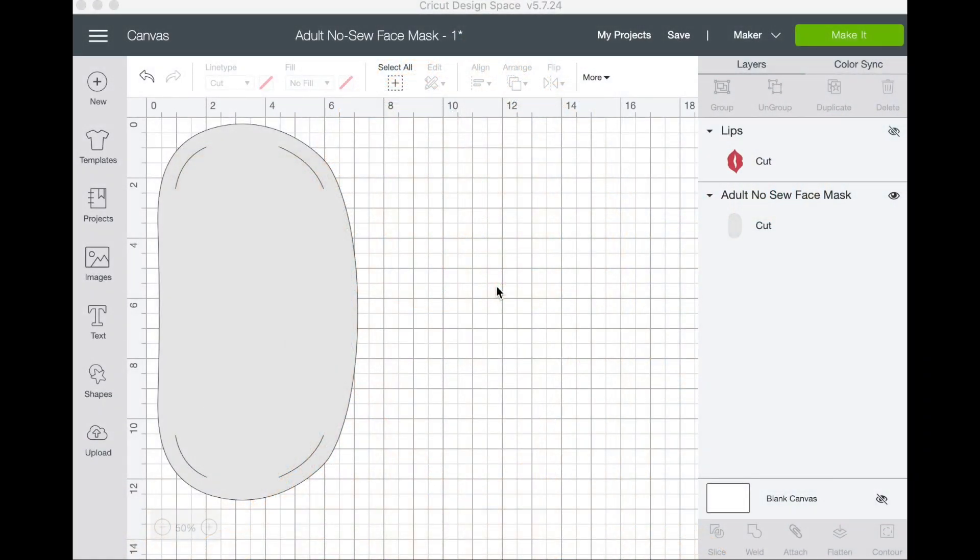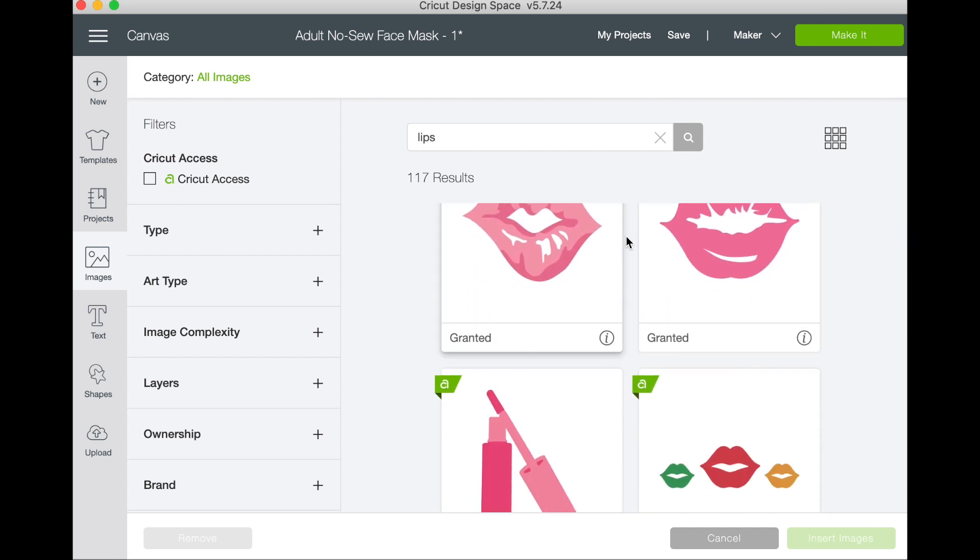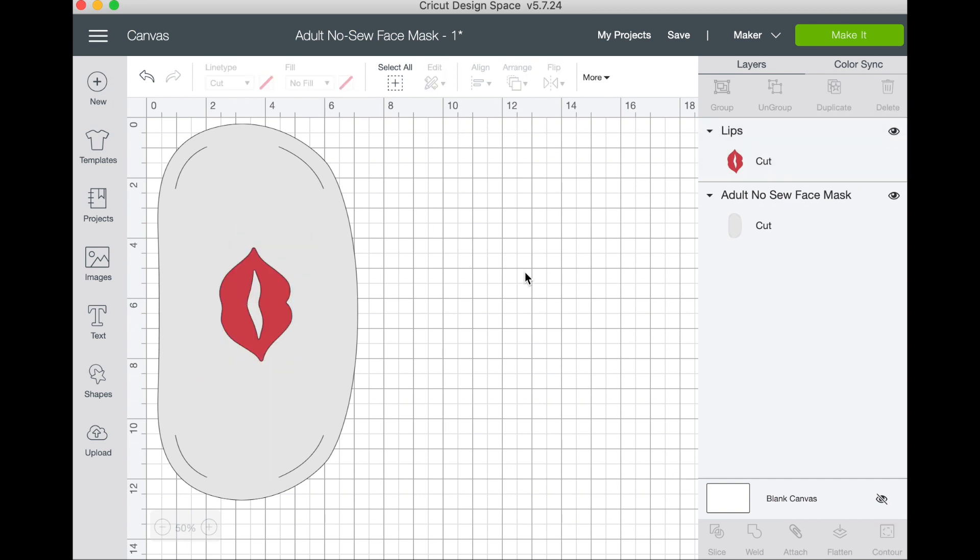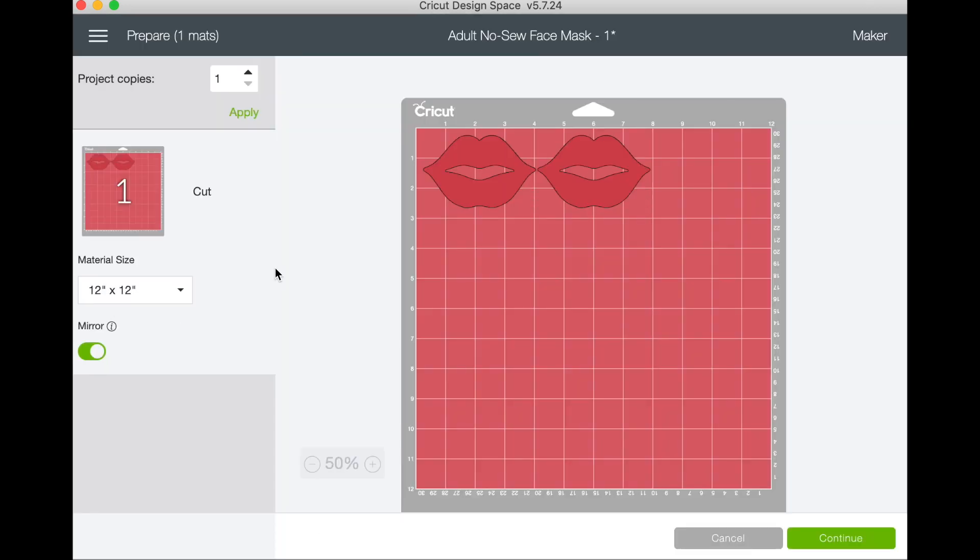Okay so I've cut out two masks out of white fabric or white t-shirt fabric and it was an infusible ink t-shirt and so I thought it would be really fun to do like infusible ink lips on it. Now if you are just using a regular t-shirt you could use iron-on to put this on as well and you could use glitter or something it would be kind of fun right? So if you go into images and just search lips there's all different kinds that you could use. I've already chosen one so let's cancel and I'll unhide that. So now what I'm going to do is I'm just going to cut out just the lips so I'm going to hide the mask and I'm going to actually duplicate that and do two of them since I have two masks and we'll go ahead and make it and because this is infusible ink we want to mirror our design.